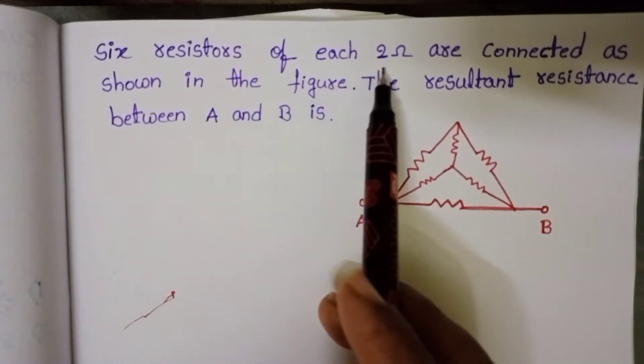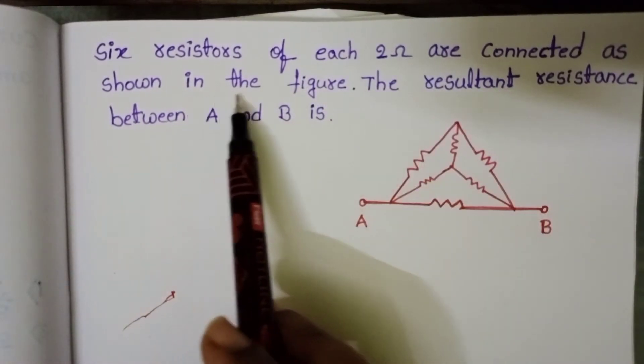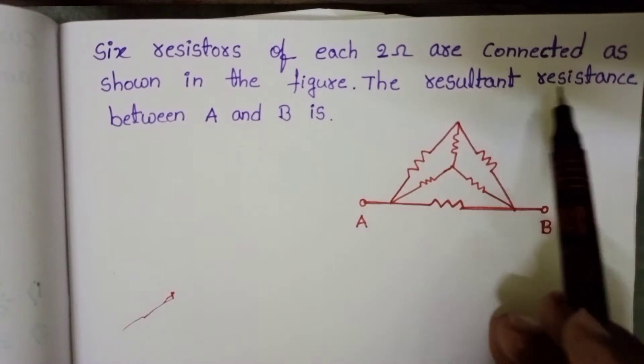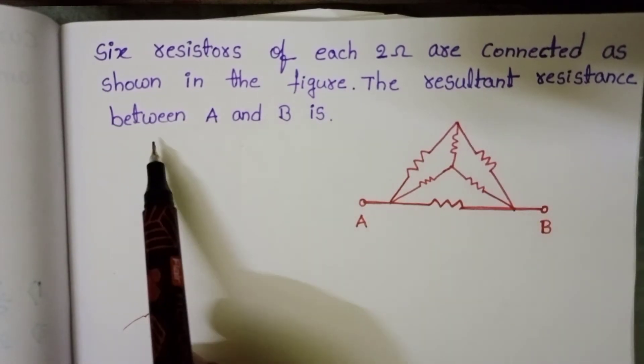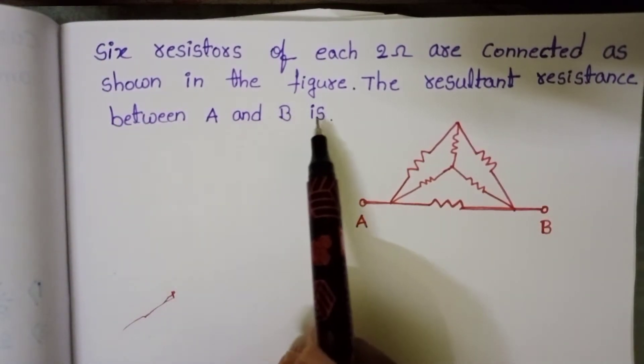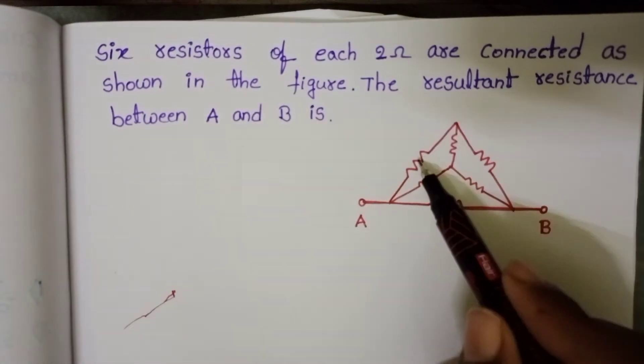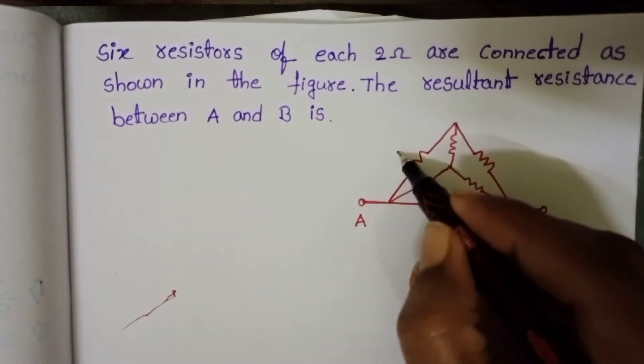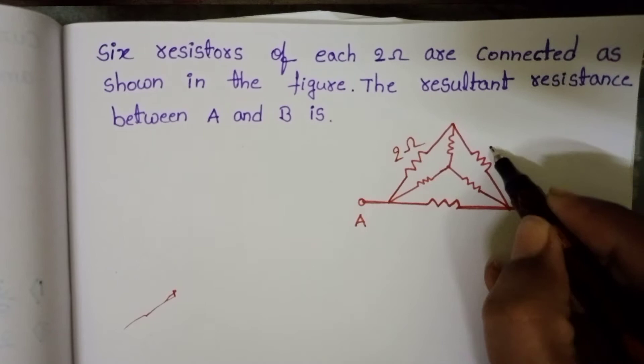Six resistors of each 2 ohm are connected as shown in the figure. The resultant resistance between A and B is to be found. Each resistor of resistance is 2 ohm.